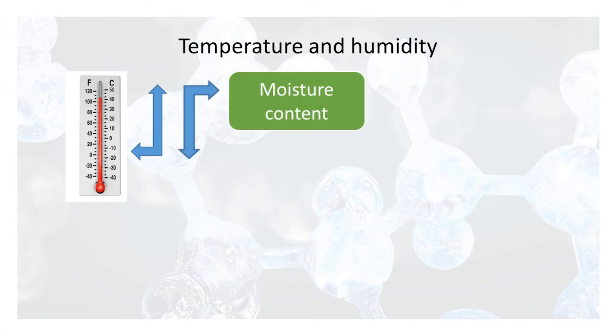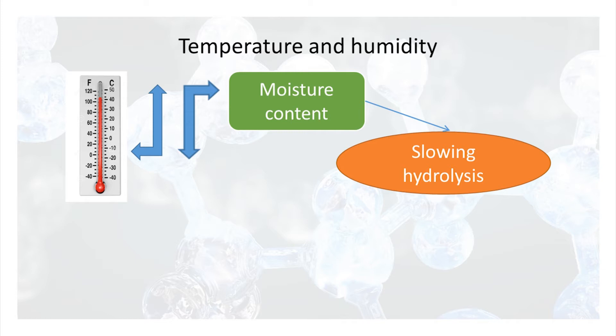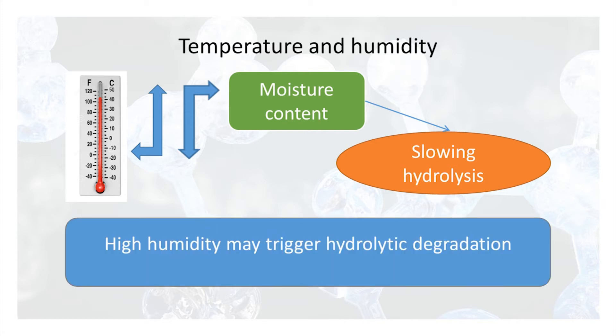Temperature and humidity are another set of factors. Higher temperatures may reduce the moisture content of a product, thus slowing down hydrolysis, while humidity may trigger hydrolytic degradation. I invite you to share more examples of such factors in the discussion forum. So we have covered hydrolysis — what it is, how to prevent it by modifying pH, and what other factors can be modulated.